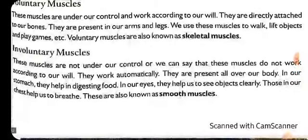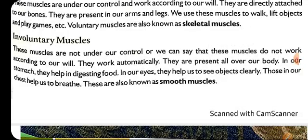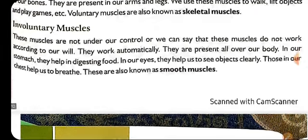Next comes involuntary muscles. These muscles are not under our control — they do not work according to our will. They keep on working automatically. Like digestion — the stomach keeps digesting food on its own, we have no role in it. Our eyes also help us to see things at long distances clearly — they do so automatically. In the chest, the lungs keep on working continuously with expansion and contraction. These are involuntary muscles, also called smooth muscles.